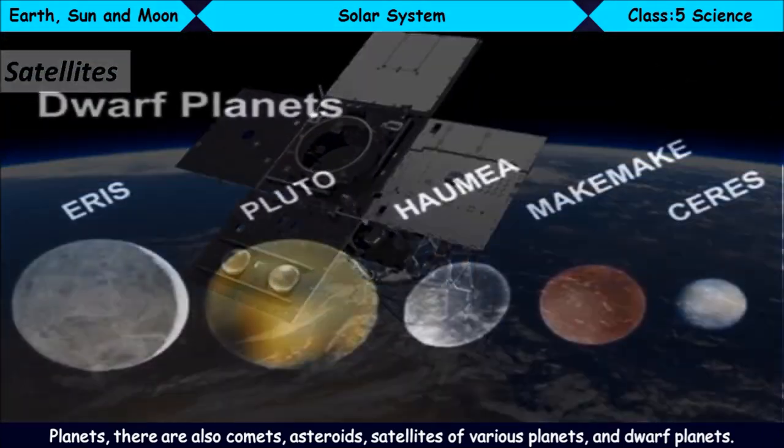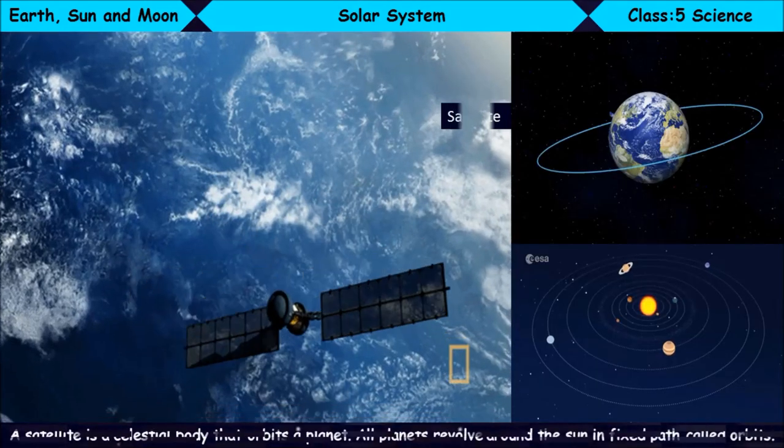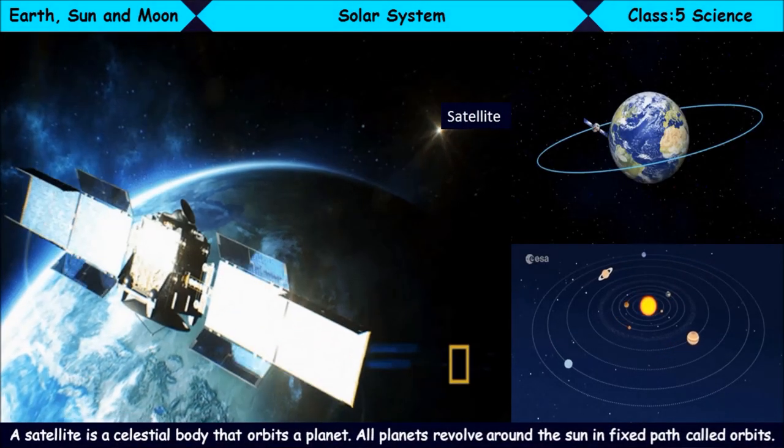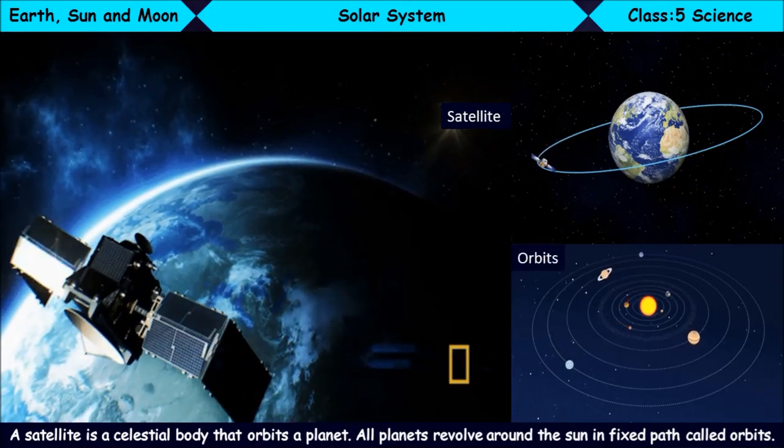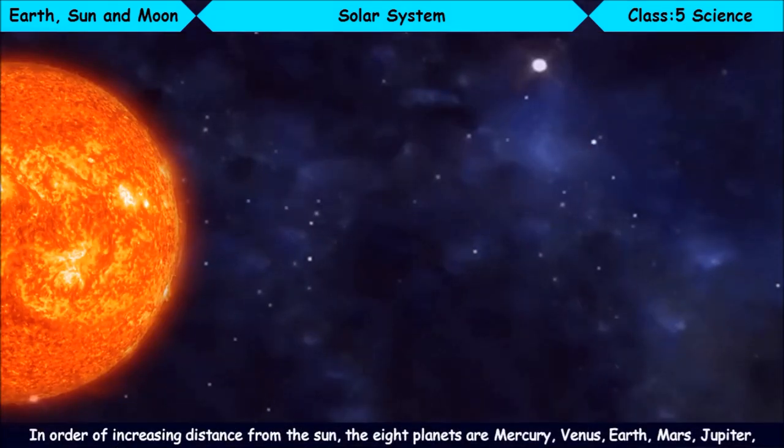And dwarf planets. A satellite is a celestial body that orbits a planet. All planets revolve around the sun in fixed paths called orbits. In order of increasing distance from the sun,